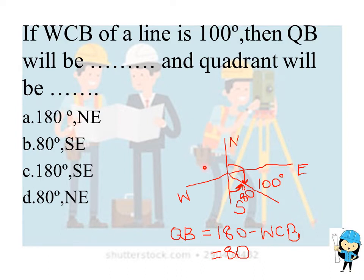If the angle lies in the fourth quadrant, then we should subtract from 360 degrees, that is quadratic bearing equals 360 degrees minus WCB.